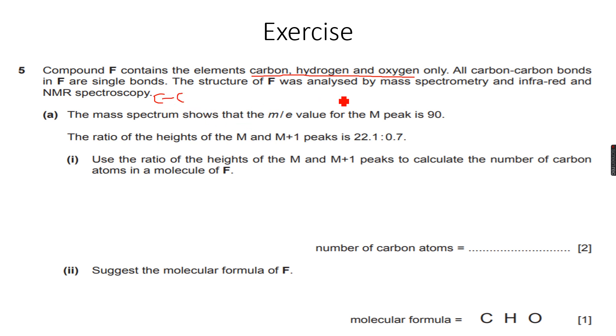The structure of F was analyzed by mass spectrometry and infrared and NMR spectroscopy. There would be many parts to this question. We are only doing the mass spectrometry part of it. The mass spectrum shows that the m/e - m/e is the same as m/z. So the m/e value for the M peak is 90. So the molecular mass of compound F is 90, because the m/e value of the M peak gives us the molecular mass of the compound. So the Mr of F is equal to 90.